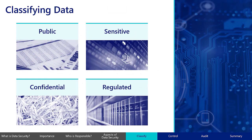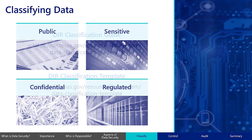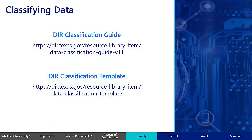In some organizations, confidential and regulated data may be treated the same and combined into a single data classification. An organization may also define additional data classifications to meet business needs. To assist organizations in their data classification efforts, the Texas Department of Information Resources provides a classification guide and a template on the DIR website.